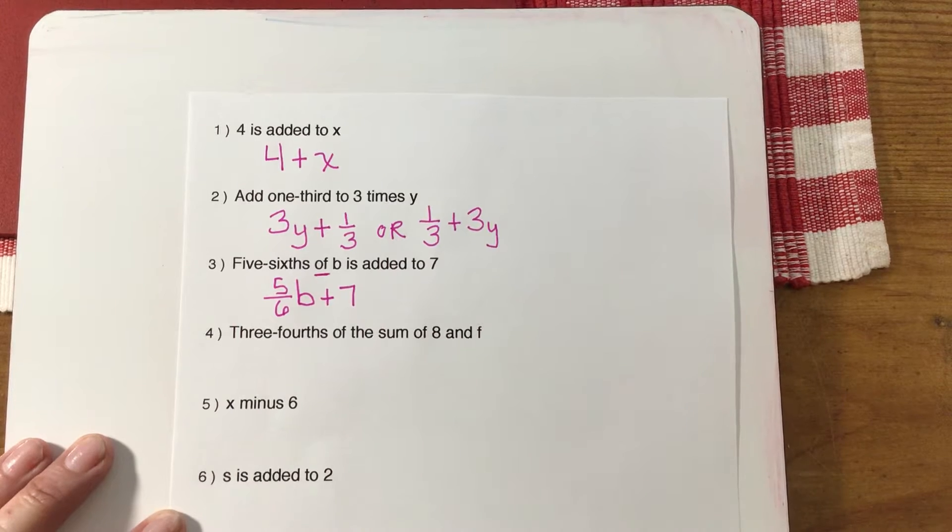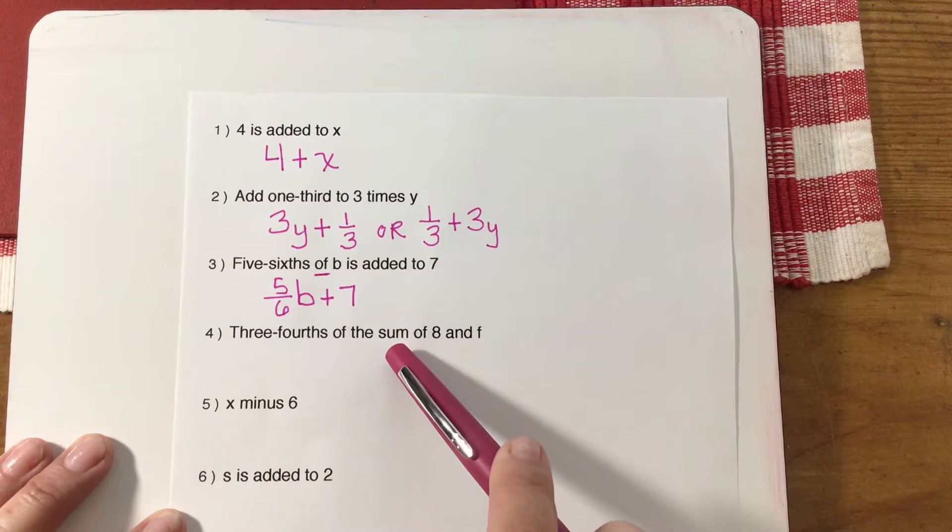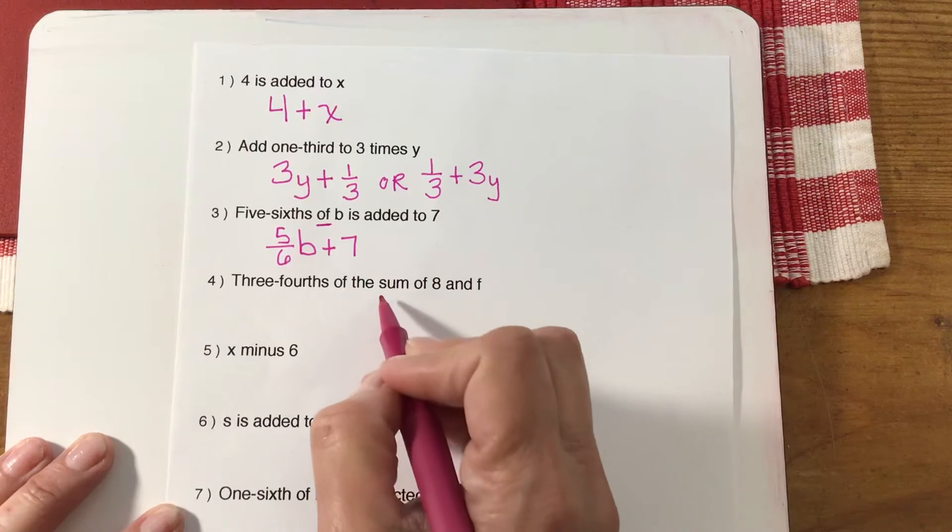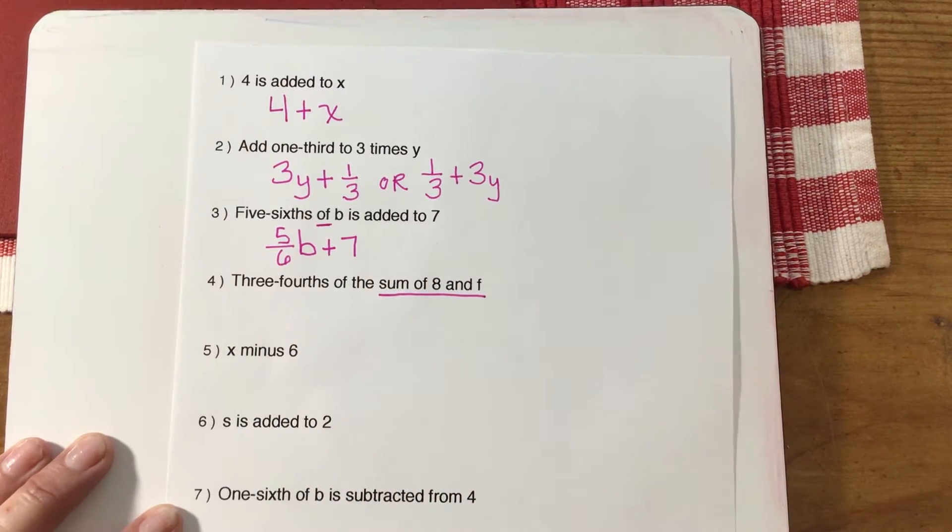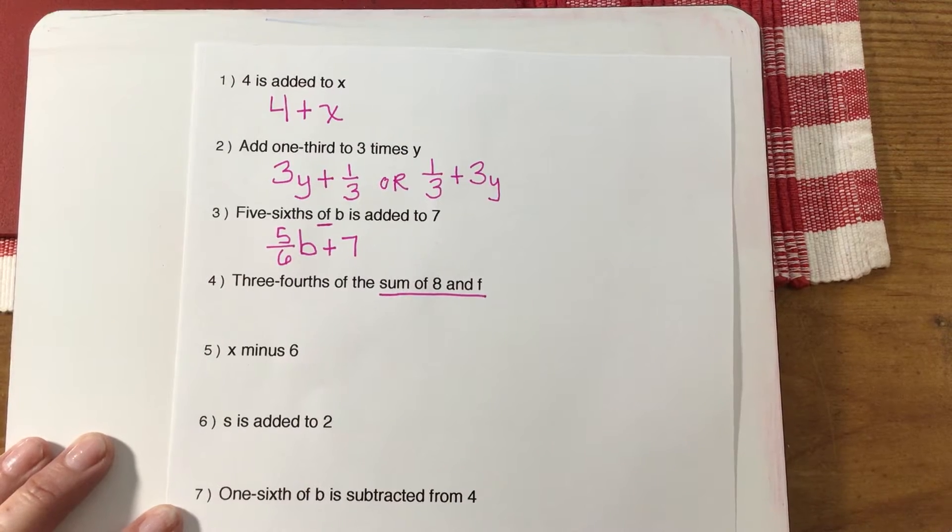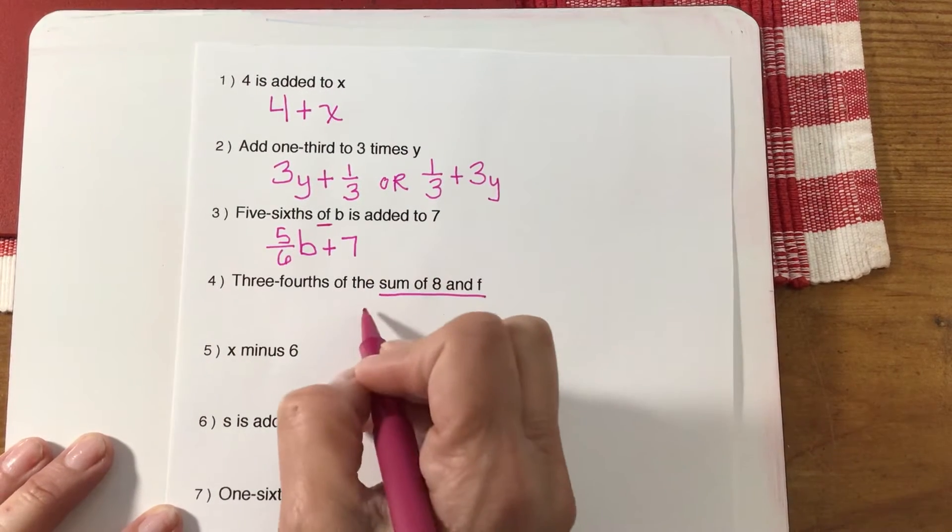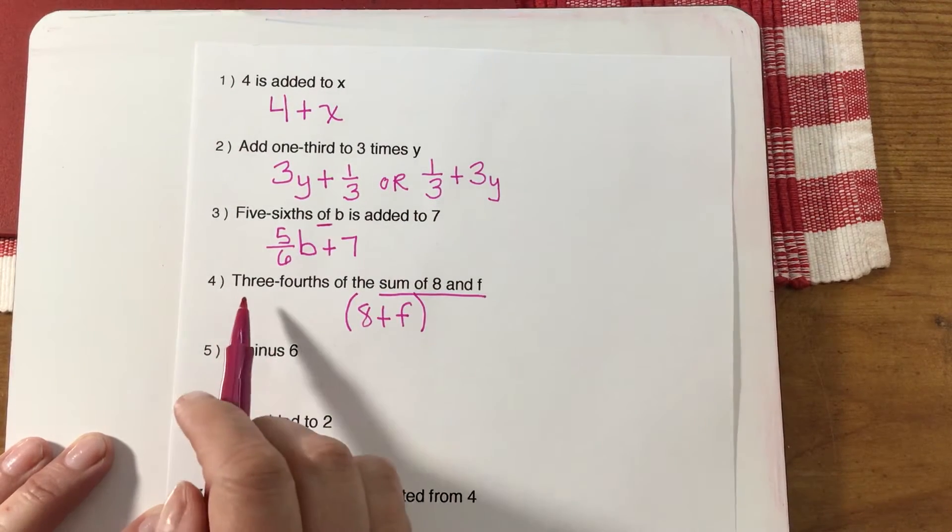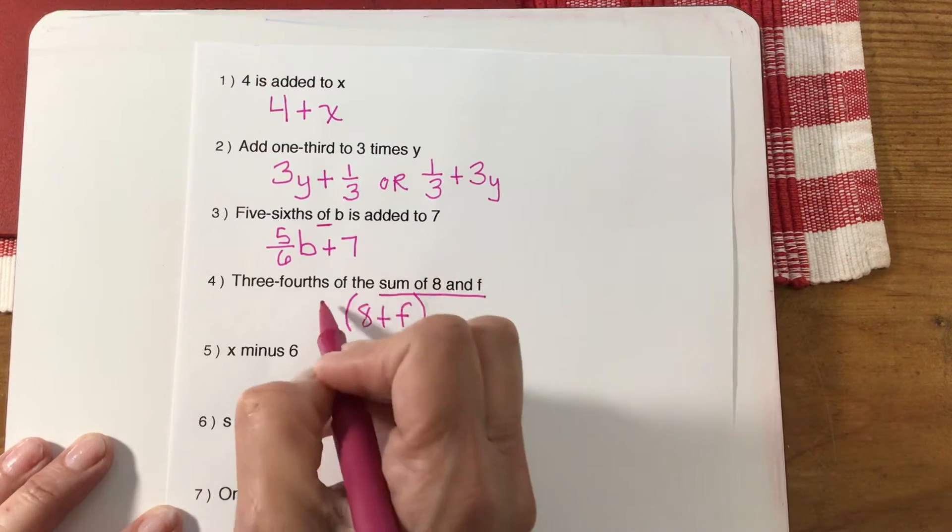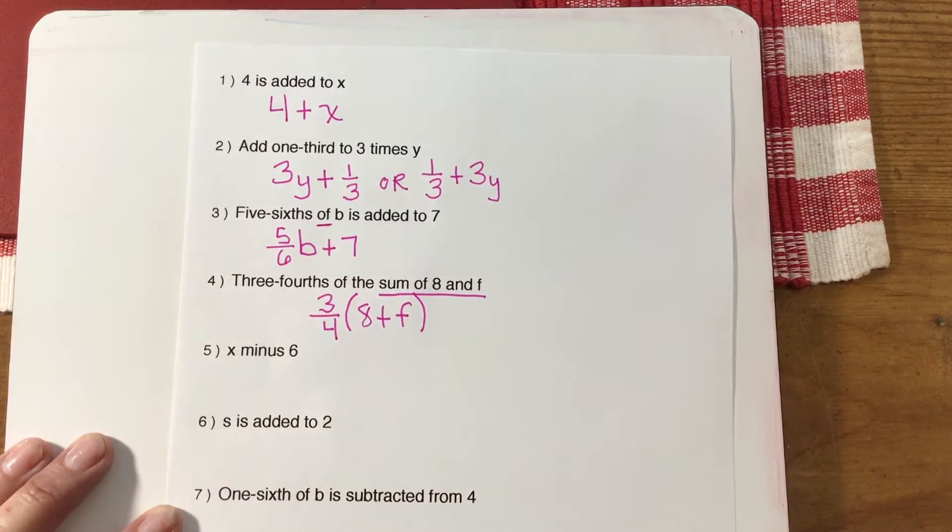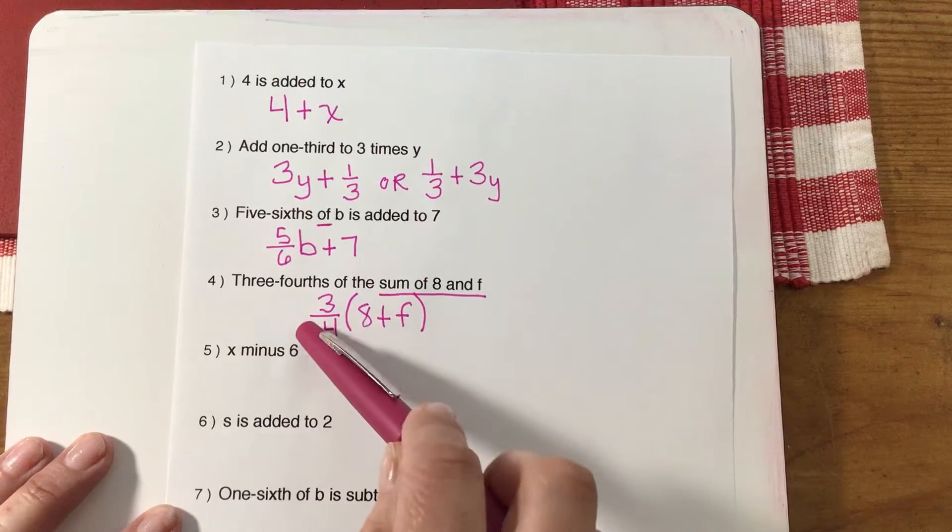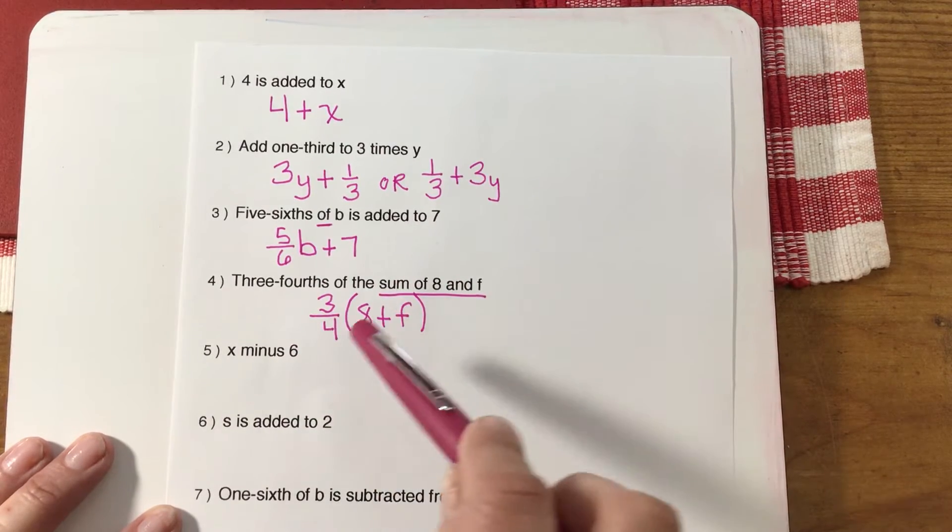This one's a little tricky. Three-fourths of the sum of eight and f. This is important information here. First of all, you gotta know what the word sum means. Sum means addition. So if I'm gonna put 8 + f, it's gonna look like that. I need to do that part first, so I'm gonna put that in parentheses. I want three-fourths of, so three-fourths is gonna go right outside your parentheses. In this case you're gonna want to put the three-fourths first. You'll never see the three-fourths on the other side of the parentheses.